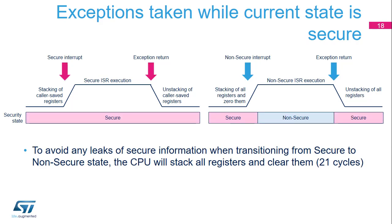When an interrupt is taken while the current security state is secure and the interrupt source is secure, the sequence is the same as the v7M exception mechanism. The caller-saved registers are automatically saved when the exception is taken and automatically restored upon execution of the exception return instruction. The interrupt service routine (ISR) is executed in secure state.